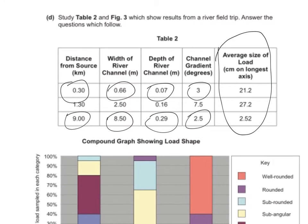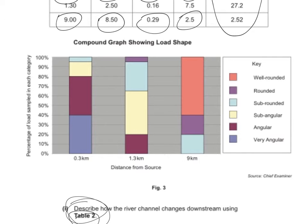So again, I would start by saying that at 0.3 kilometers from the source, the average size of the load is large at 21.2 centimeters. Nine kilometers from the source, it's much smaller at 2.52 centimeters. I would also use this graph to say 0.3 kilometers from the source. The highest percentage of load shape is very angular with 40% and angular with 80%. And I would also indicate that there are no well-rounded rocks at this stage.